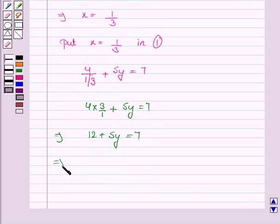This implies 5y = 7 minus 12, so 5y = -5. Dividing both sides by 5, we have y = -1.